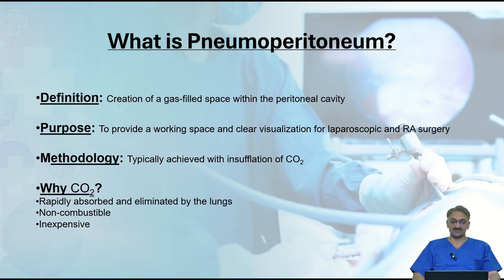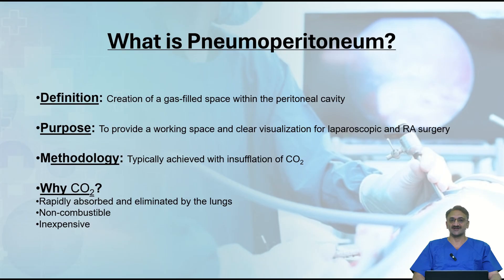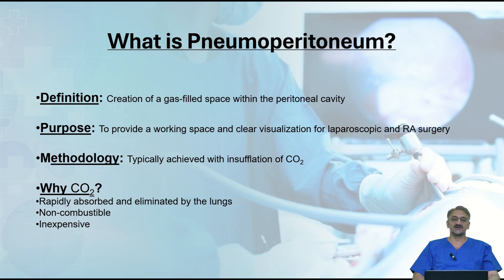Typically this is achieved with insufflation of carbon dioxide. However, other gases were also previously tried in the past, but carbon dioxide has its own positive factors. For example, it is rapidly absorbable — absorbed through the peritoneal cavity but also eliminated very easily by the lungs, as compared to other gases which may be retained. Its negative implications can be minimized by eliminating it from the body easily. It is also non-combustible, so any kind of energy source — monopolar, bipolar, LigaSure, Enseal, or Thunderbeat — can be used. And it is really inexpensive compared to other gases such as helium.